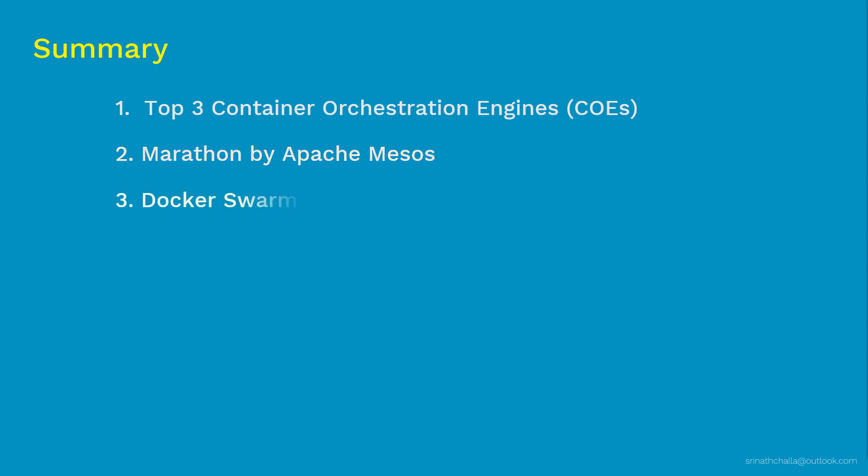Docker Swarm is a container orchestration engine from Docker Inc. It is one of the simplest and easiest to set up, though it is a little less mature compared to other engines. It is ideal for companies with a small team size. Kubernetes is the gold standard — the most popular and mature container orchestration engine. A separate dedicated video covers why Kubernetes is considered the best container orchestration engine.